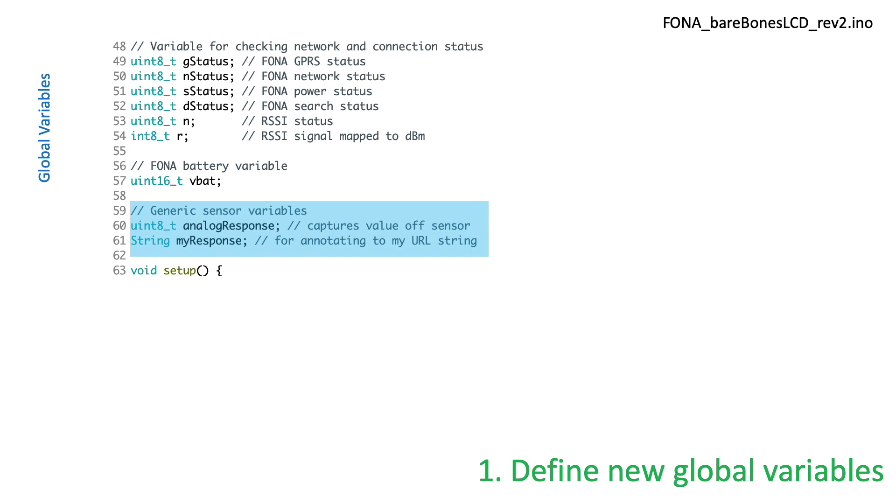And here are the added variables. For this demonstration, I've defined two generic variables for registering an analog response from our sensor. The first is of the type unsigned integer called analog response, which will capture the signal from analog pin A0 which is wired to our sensor. I also created a string variable called myResponse so that I can convert that signal to a string type and then append it to the URL string that will result in FONA posting this data to Thingspeak.